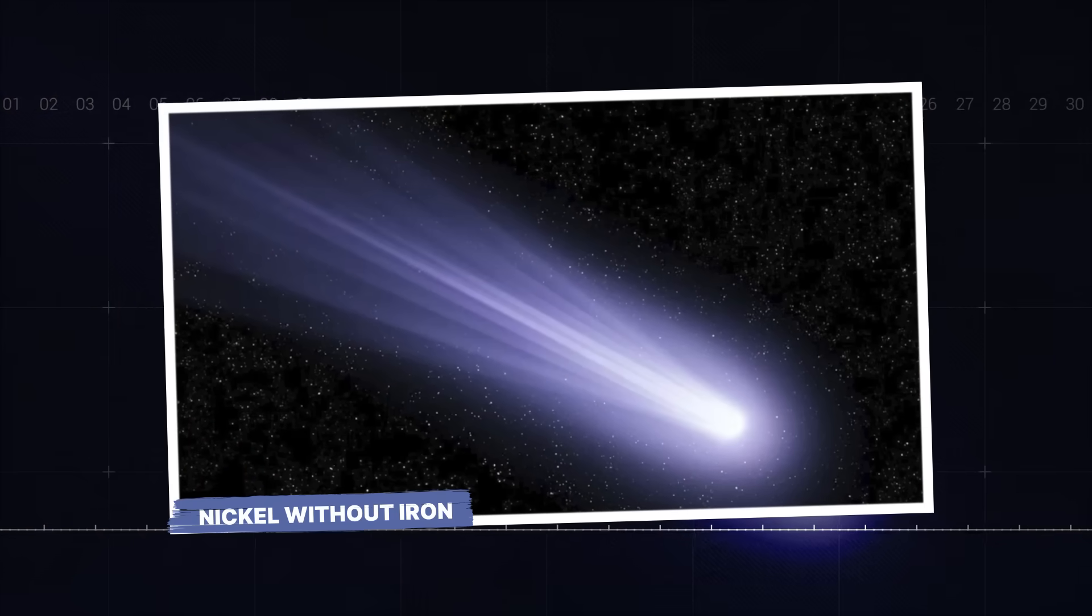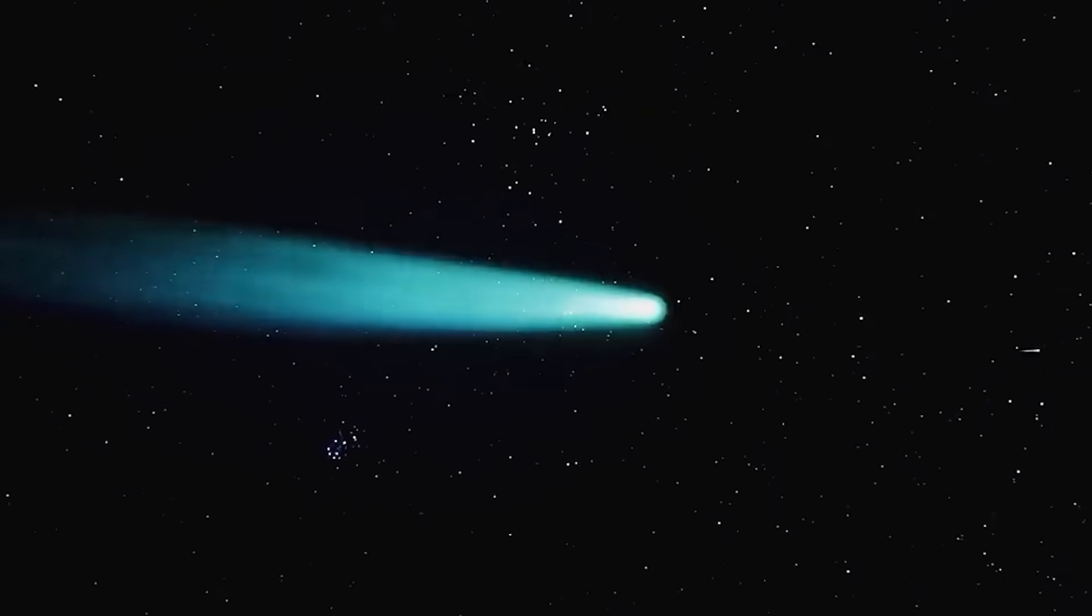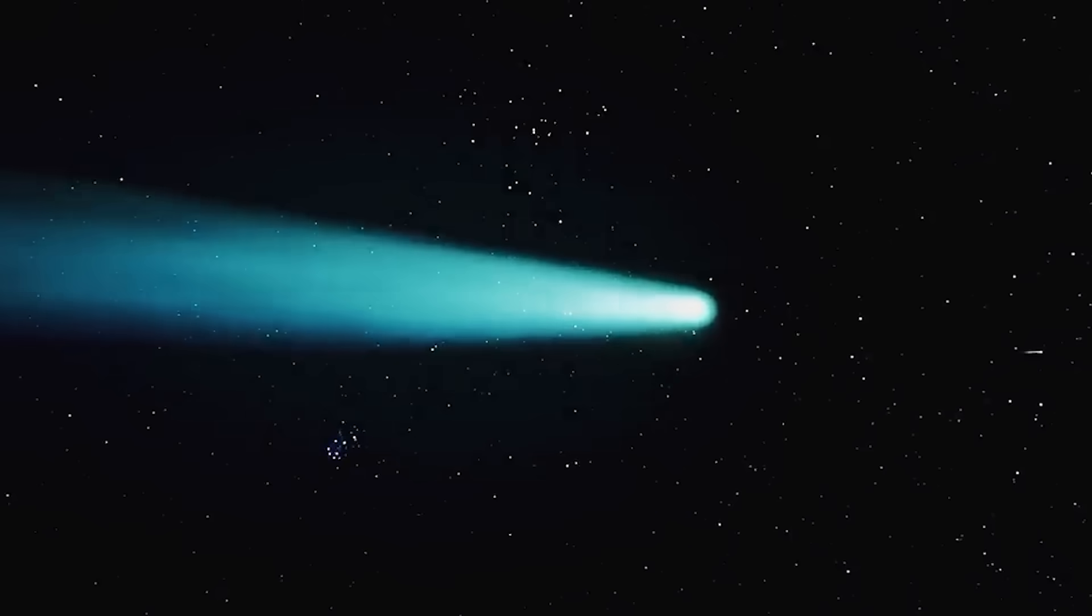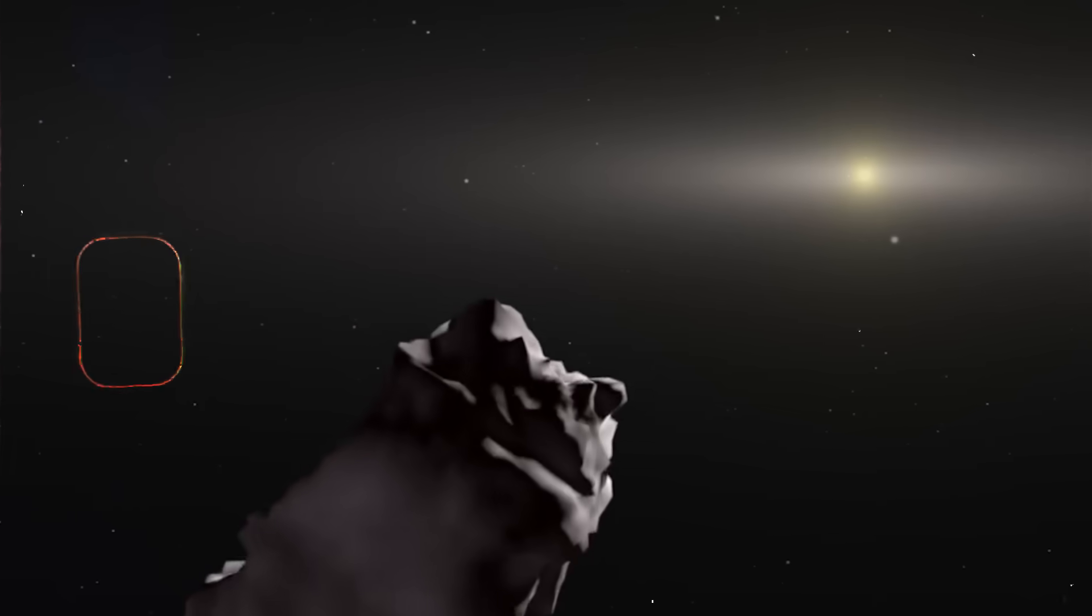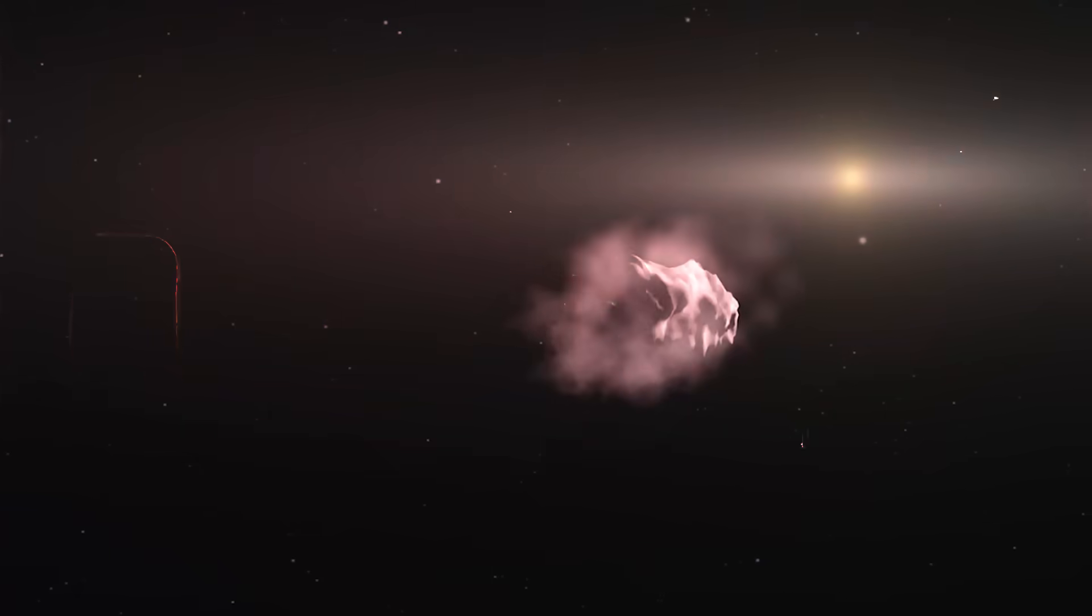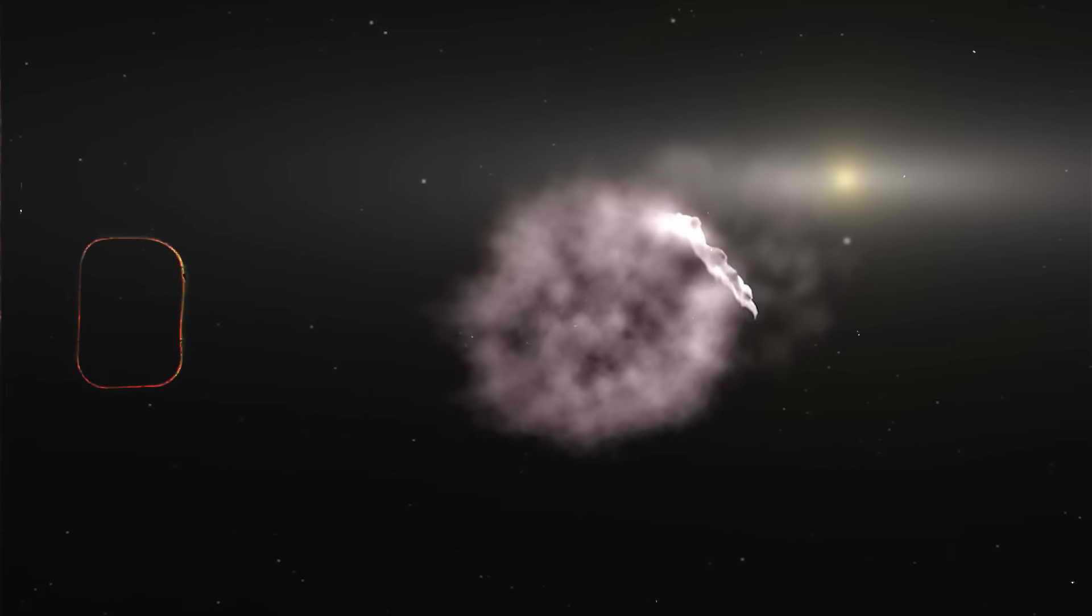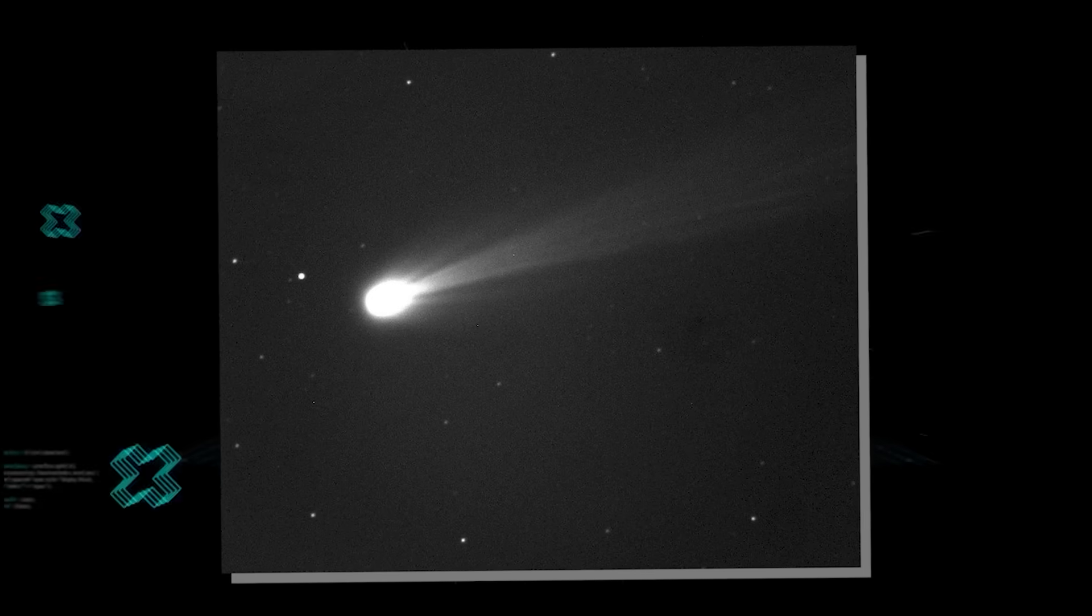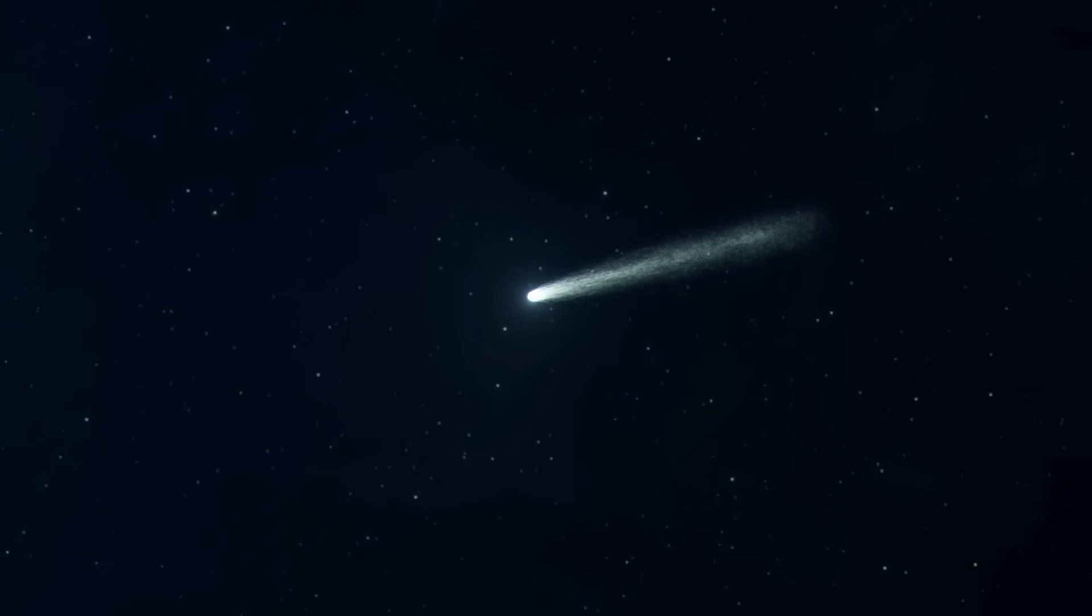Nickel without iron. When a comet veers off its gravitational path, there's usually a simple explanation. Outgassing. As the sun's warmth heats the icy nucleus, frozen gases erupt from the surface in powerful jets. It's a natural rocket engine. This non-gravitational force is well understood and has been successfully modeled for decades.